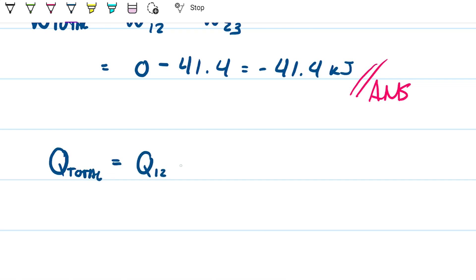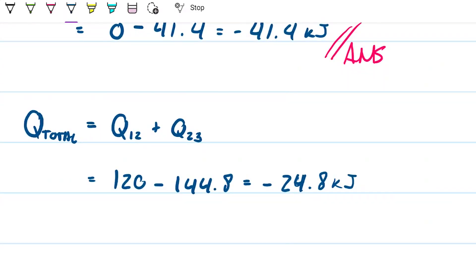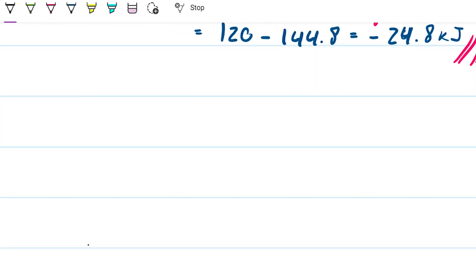Total heat from 1 to 2 and 2 to 3: we're putting in 120 kilojoules and releasing 144.8 kilojoules, giving a total heat of negative 24.8 kilojoules. Since more is released than absorbed, the net heat is released — 24.8 kilojoules leaving the system overall.